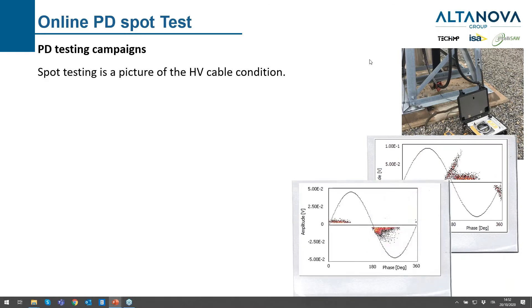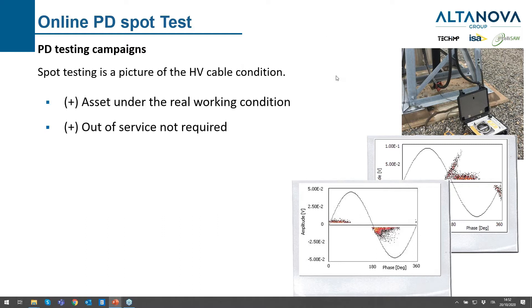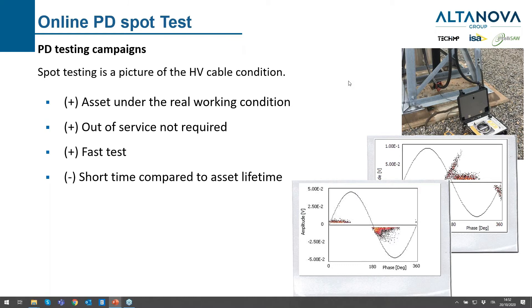We have to consider that spot testing is like a picture of the HV cable condition. There are several good points: the system is working in real working conditions, so we have voltage, current, aging — everything is there. We don't need any out-of-service period. This is a very fast test because we can test three accessories in less than one hour.